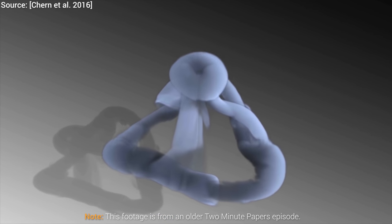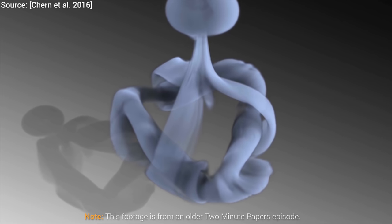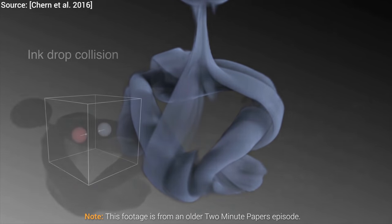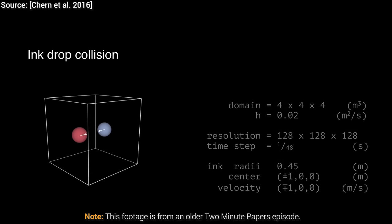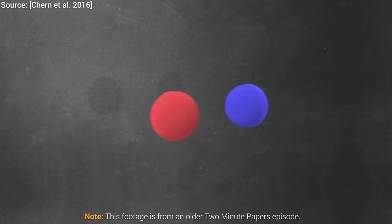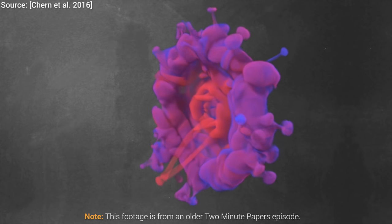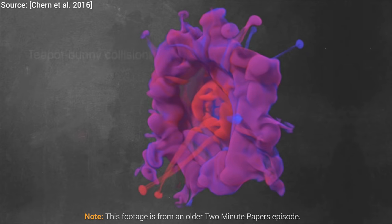For now, the results look quite reassuring. Even the phenomenon of a smoke puff bouncing back from an object is modeled with high fidelity. There was a loosely related work from the ETH Zurich and Disney research in Switzerland, and enumerating the differences is a bit too technical for such a short video, but I have included it in the video description box for the more curious fellow scholars out there.